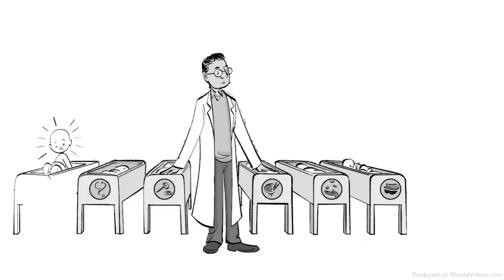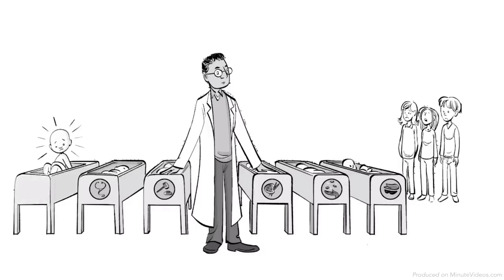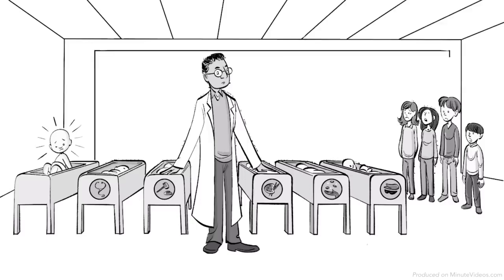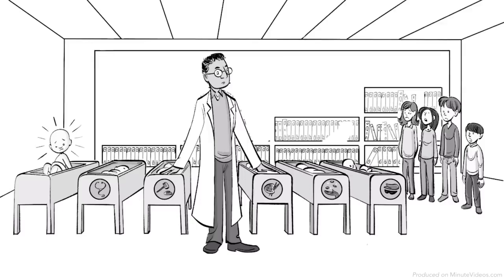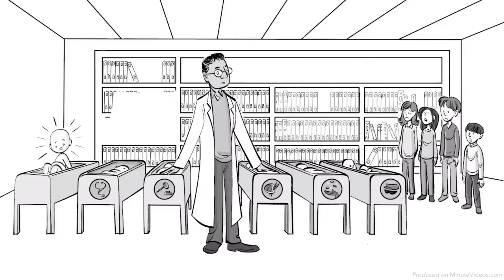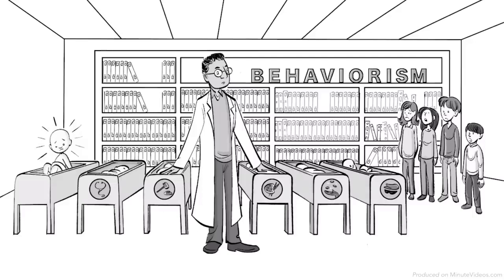First, he completed experiments with 8-month-old Albert, and later he applied his theory when raising his own children. In essence, he applied the scientific method to human psychology which he called behaviorism.